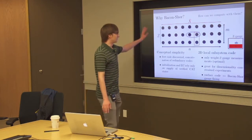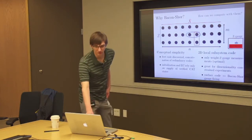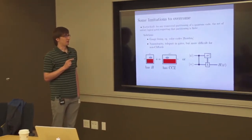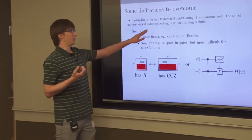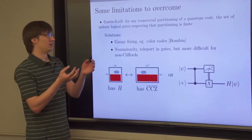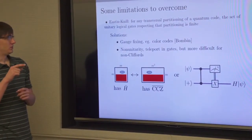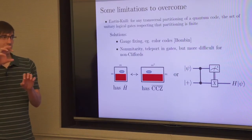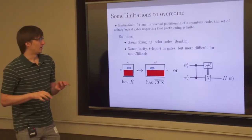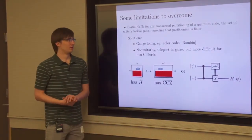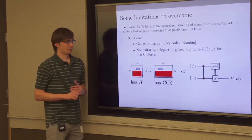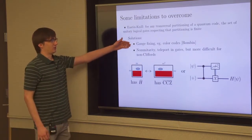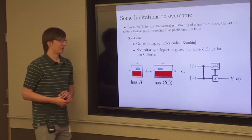This is a very nice simple code, and the question is how we can compute with it. There are several limitations to overcome. The first is the Eastin-Knill theorem, which says that if you partition the qubits in the code — a transversal partitioning — the set of unitary gates you can do that act as a tensor product over that partition forms a finite group. This means in particular you cannot do universal transversal computing.